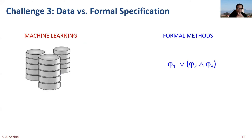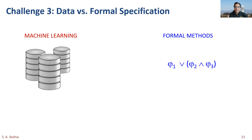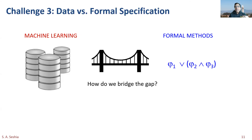The third challenge is data versus formal specifications. In the machine learning world, people specify things using labeled or unlabeled data — data is the specification, that's your ground truth. In formal methods, we write specifications using temporal logic, Büchi automata, and so on. This is yet another gap we need to bridge: how do we go between specifications provided as data and the kinds of specifications we need for formal reasoning? Those are the three challenges; I'll come back to them at the end.